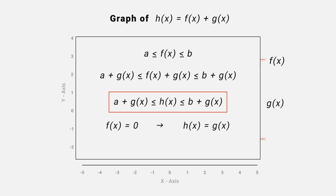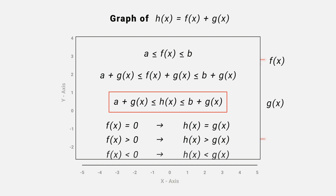So h lies between a plus g and b plus g. Now when f is equal to 0, we get h is equal to g. When f is greater than 0, we get h is greater than g. And when f is less than 0, we get h is less than g.